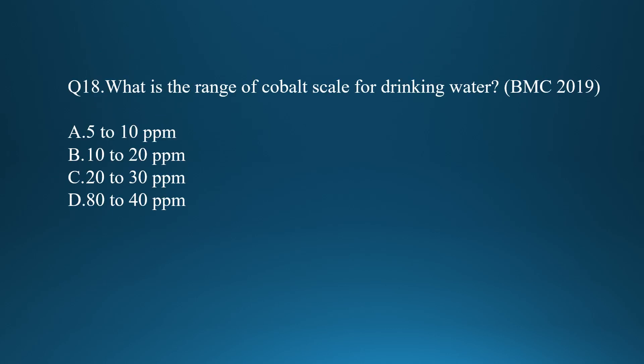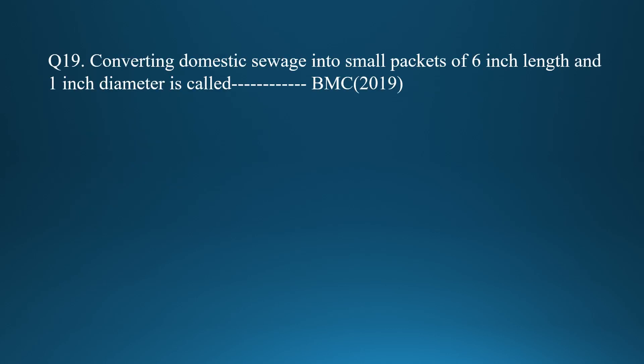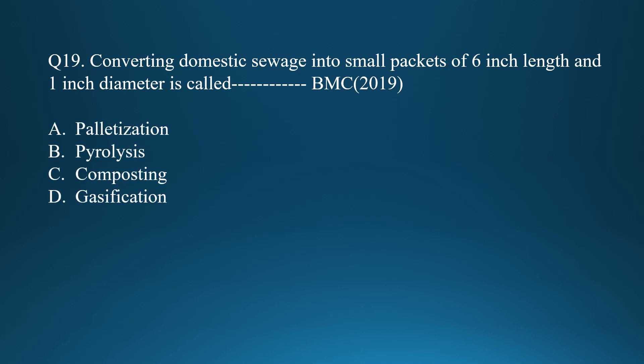Question seventeen: the range of the Cobalt scale for drinking water is 10 to 20 ppm. Question eighteen: converting domestic sewage into small packets of 6-inch length and 1-inch diameter is called pelletization.